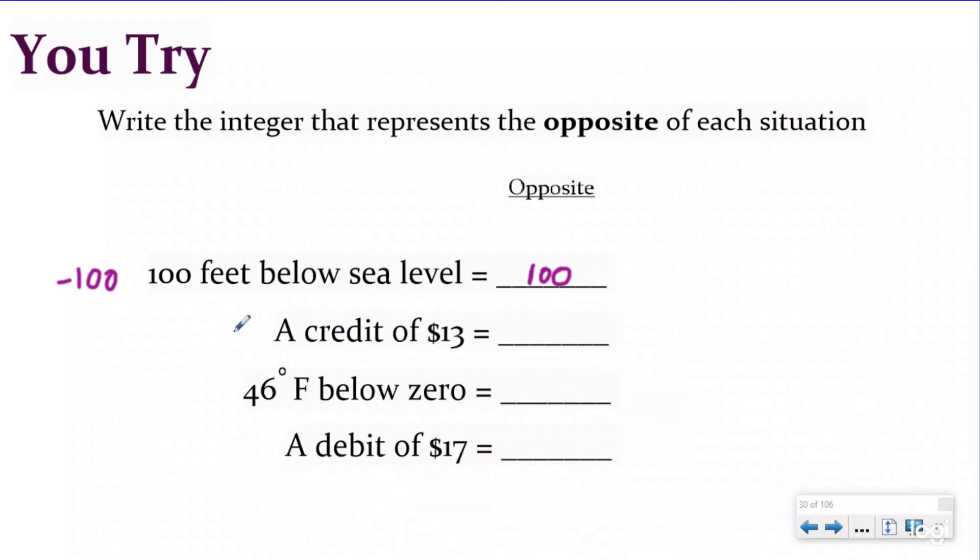A credit of $13. That's going to be positive 13 because we're going to be depositing money into our bank account, which means the opposite would be a debit of 13 or negative 13. 46 degrees Fahrenheit below zero. And my key thing is below here. So I'm going to be negative 46, which means my opposite would be above zero, which would be positive 46.